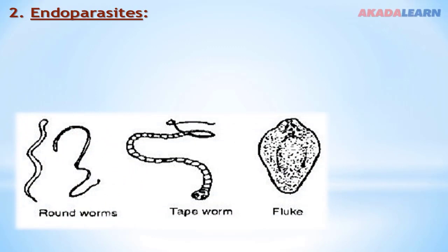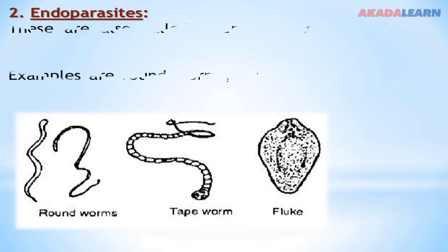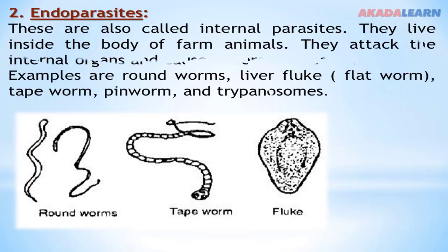The endoparasites, also called internal parasites, live inside the body of farm animals. They attack the internal organs and cause different diseases. Examples of endoparasites are roundworms, liver fluke (also known as the flatworm), tapeworm, pinworm, and trypanosomes.